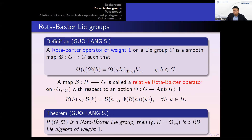We can now give our main result. Namely, if (G, B) is a Rota-Baxter Lie group, then we consider its differentiation. A Lie group G gives rise to the Lie algebra g. Since B(e) = e — which follows from the definition — this map B induces a tangent map, which we denote capital B from g to g. It turns out that this Lie algebra g together with this capital B is a Rota-Baxter Lie algebra of weight one. So capital B is a Rota-Baxter operator of weight one.